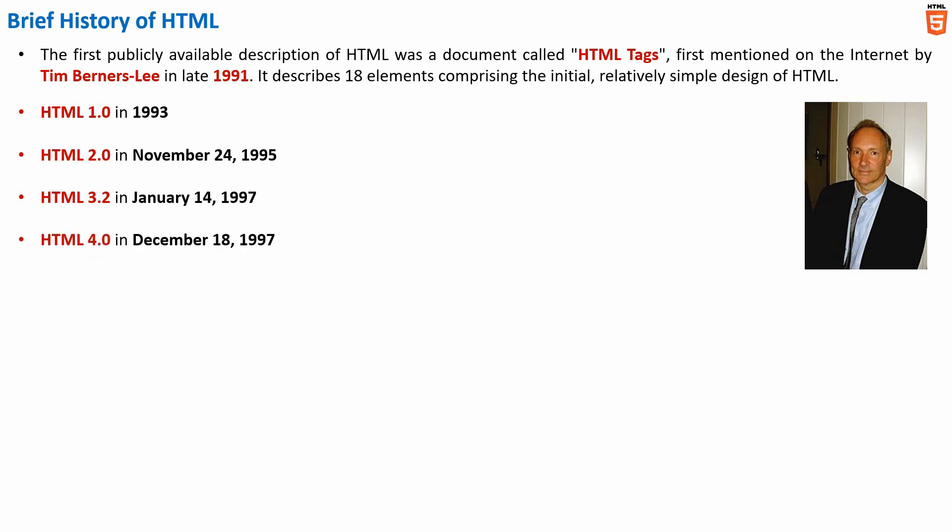Then, on December 18, 1997, HTML 4.0 was published as the W3C recommendation. It offered three variations: Strict, in which deprecated elements were forbidden; Transitional, in which deprecated elements were allowed; and Frameset, in which mostly frame-related elements were allowed. On April 24, 1998, HTML 4.0 was reissued with some minor changes without changing the version number.